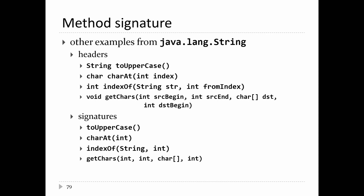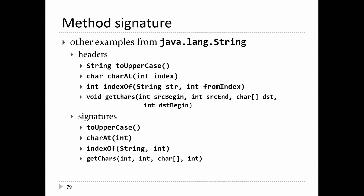Here are some more examples from the String class. The method toUpperCase has a signature of just 'toUpperCase'. The method charAt with one int parameter has signature 'charAt(int)'. indexOf is 'indexOf(String, int)'. And getChars is 'getChars(int, int, char[], int)'. So the signature is the method name plus the types of parameters in the order they were declared.